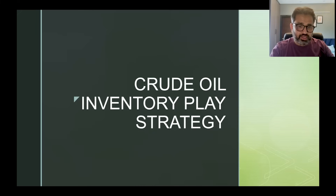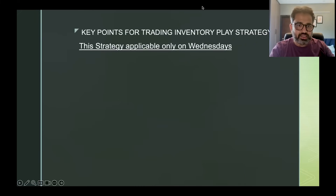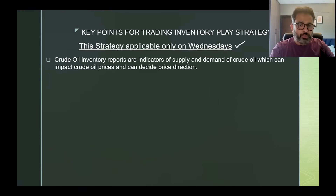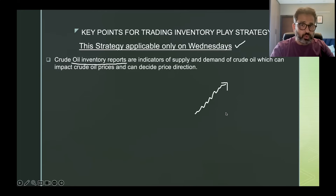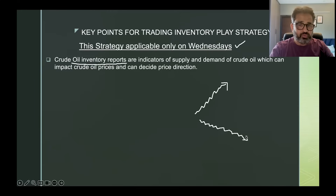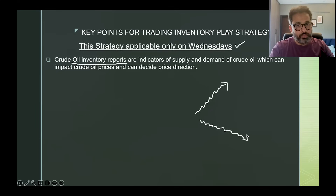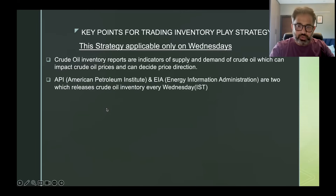This strategy is applicable only on Wednesdays. Crude oil inventory reports are indicators of supply and demand of crude oil, which can impact crude oil prices and decide price direction. Crude oil can go up if inventory report says there is very less inventory, meaning more demand. If inventory comes higher, that means more supply and less demand, which is bearish for crude oil. But trading is not as simple as just buying a call or put option.